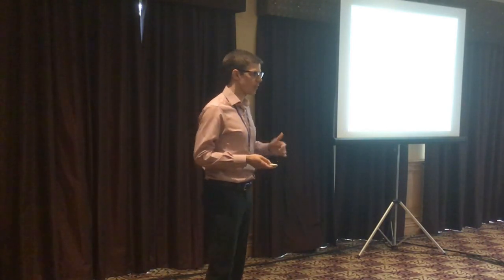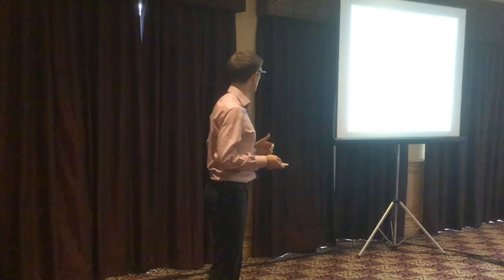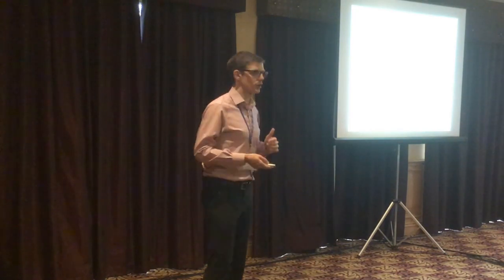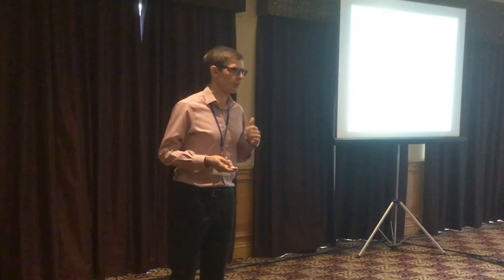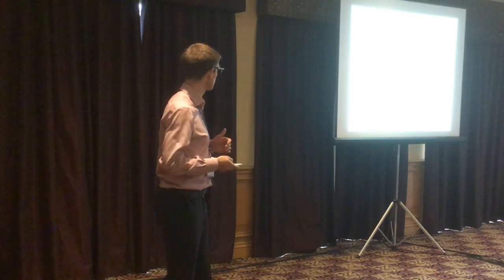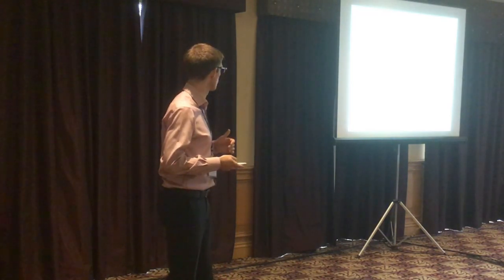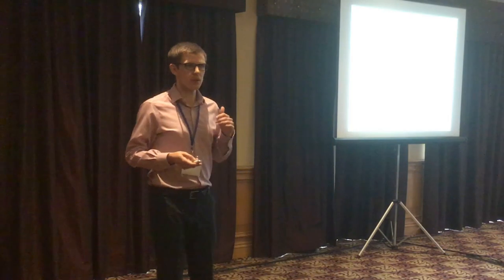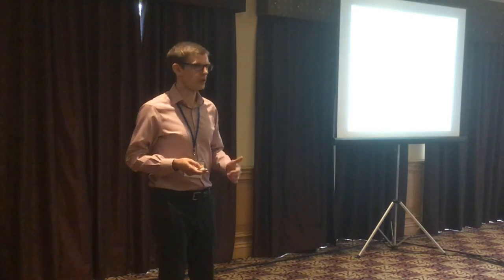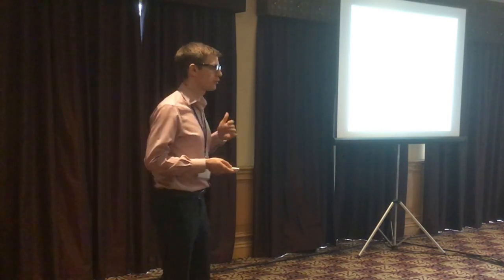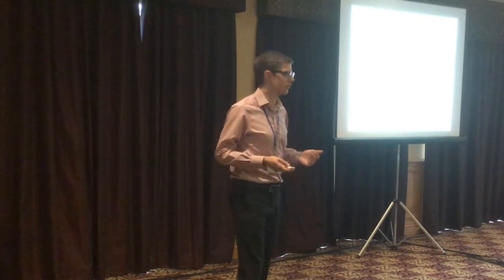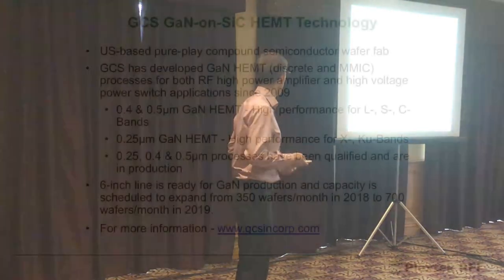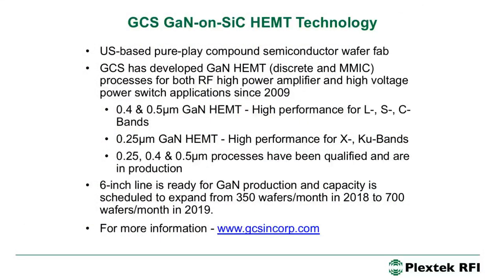We chose to design an MMIC on gallium nitride using a symmetrical design, targeting a power of 45 dBm. The gallium nitride process was from GCS, a pure compound semiconductor wafer fab. They have 0.5 and 0.4 micron processes. These processes are qualified and in production, with a six-inch line ready for production and capacity due to double this year.